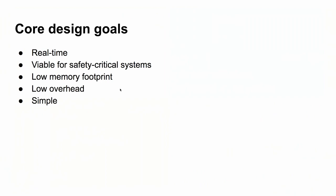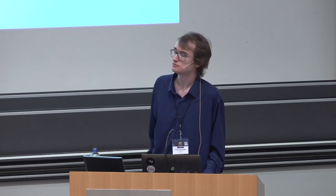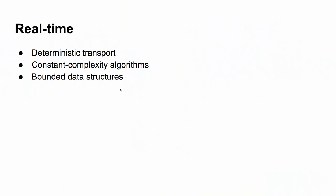How are we actually doing that? We have a set of core design goals which form the basic principles guiding our design decisions and engineering. Obviously, it's a real-time protocol designed for real-time systems. It should be viable for safety-critical systems. At the same time, we want it to be simple so that it's easy to validate a UAVCAN deployment — to ensure that the entire state space is explored and it's safe for use. We'll cover all of these design goals briefly.